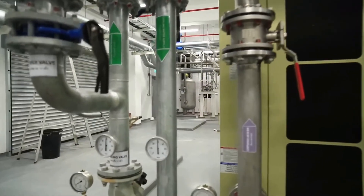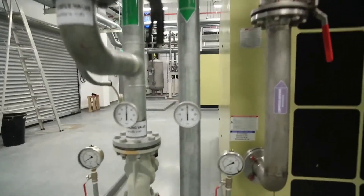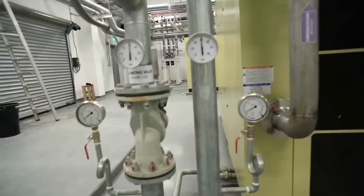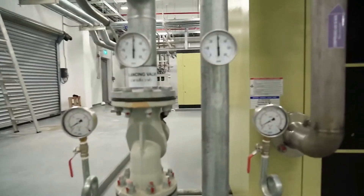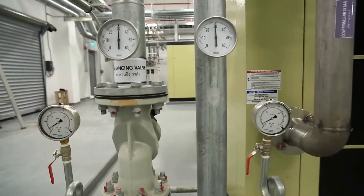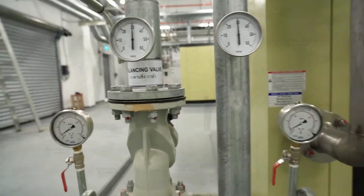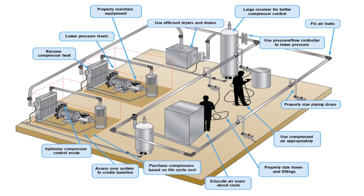most manufacturing plants will have a compressor or general maintenance room to hold all the machinery required for compressed air. In general, plants consume so much compressed air that it has been given the nickname of the fourth utility in many facilities and energy studies.